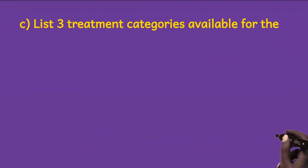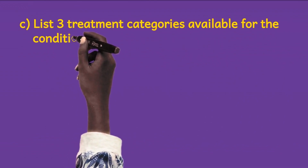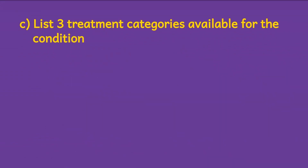Please do not forget to like and share this video, subscribe to our channel if you have not done that yet, and leave your thoughts in the comment section below. Question 3 of this clinical vignette reads: list three treatment categories available for the condition, which is TB. When you diagnose someone with TB, the patient falls into either of the following categories according to the standard treatment guidelines.